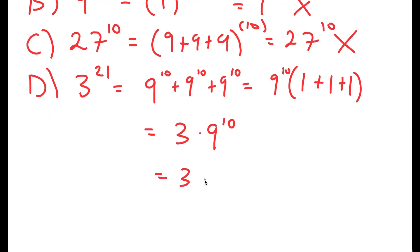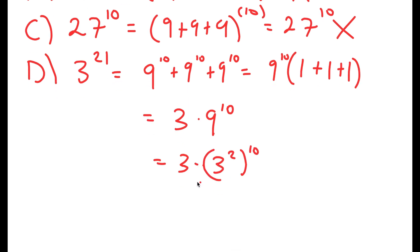Now, from here, this is equal to 3 times 3 squared to the power of 10. And if I have something in the form a to the power of m to the power of n, this is equal to a to the power of m times n. So 3 to the power of 2 to the power of 10 is equal to 3 to the power of 20.